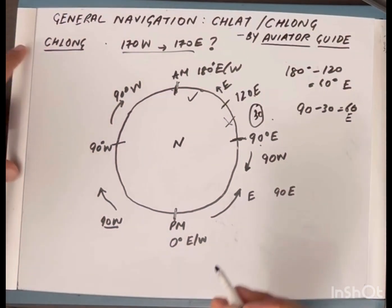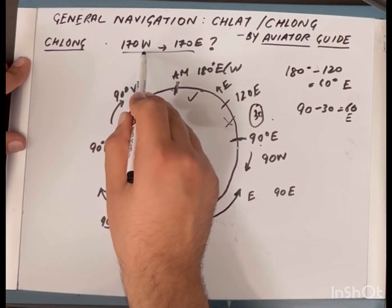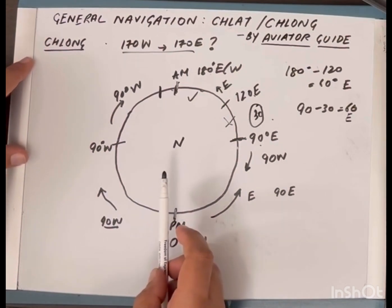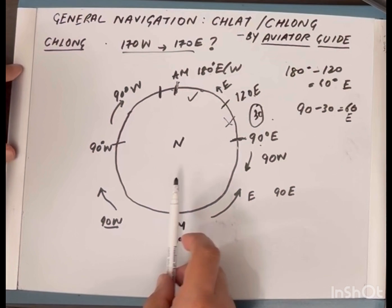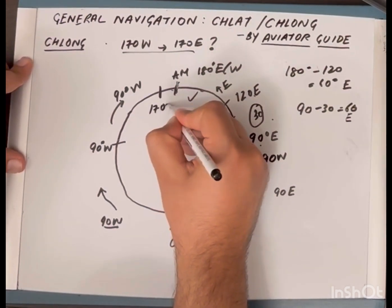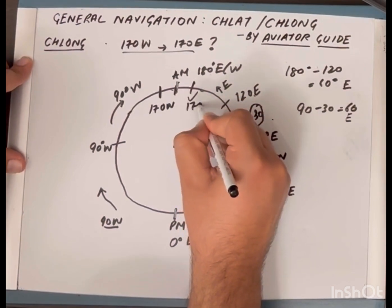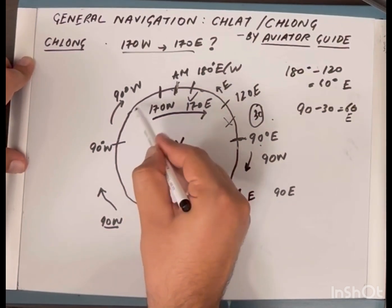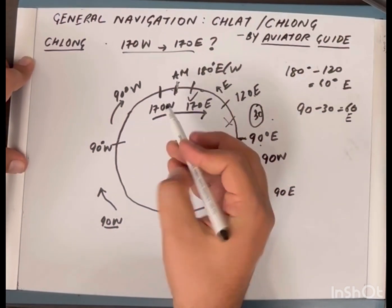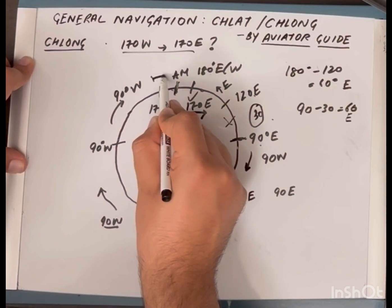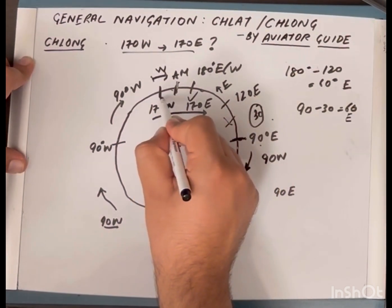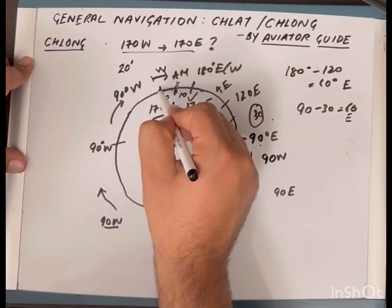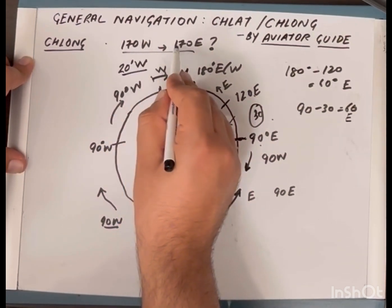Returning to the original question — 170 West to 170 East: 170 West is in the western hemisphere and 170 East is in the eastern hemisphere, both close to the anti-meridian. Traveling the shorter way, from 170 West to the anti-meridian is 10 degrees, and from the anti-meridian to 170 East is also 10 degrees, giving a total of 20 degrees. The general direction starting from 170 West is west, so the ch-long is 20 degrees West.